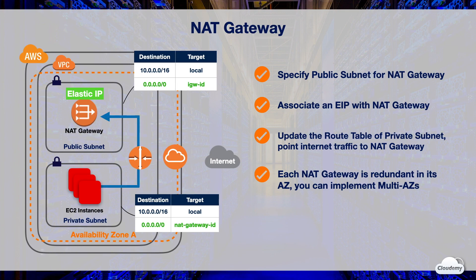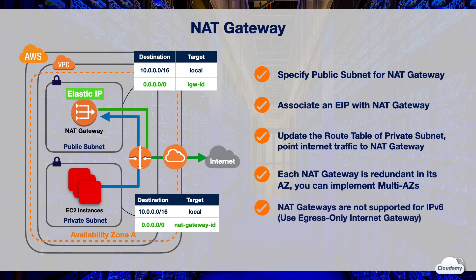The route table of the private subnet sends internet traffic from the instances in the private subnet to the NAT gateway. The NAT gateway sends the traffic to the internet gateway, using the NAT gateway's elastic IP address as the source IP address. You are charged for creating and using a NAT gateway in your account — NAT gateway hourly usage and data processing rates apply. NAT gateways are not supported for IPv6 traffic; you should use an egress-only internet gateway for IPv6 instead.